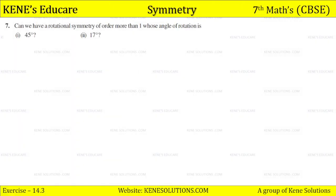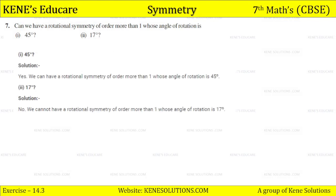Question number seven: can you have rotational symmetry of order more than one whose angle of rotation is 45 degrees or 17 degrees? Yes — for 45 degrees, we can have rotational symmetry of order more than one, since 360 is divisible by 45. But for 17 degrees, no — we cannot have rotational symmetry of order more than one, because 360 is not divisible by 17.